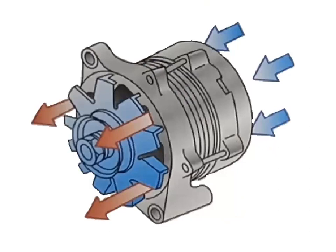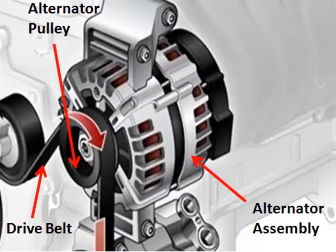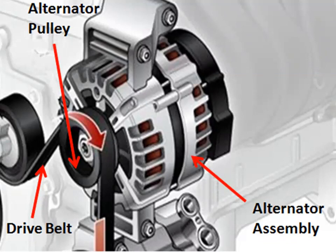A cooling fan attached to the belt pulley forces cool air into the alternator to cool it. Cooling fans are often built into the case to aid in dissipating heat. The cooling fan rotates with the pulley to move air through the alternator and cool the alternator diodes. A drive belt, sometimes called a serpentine belt, surrounding the alternator pulley and the crankshaft pulley, rotates the rotor. The drive belt may also drive other components such as the power steering pump or air conditioning compressor.